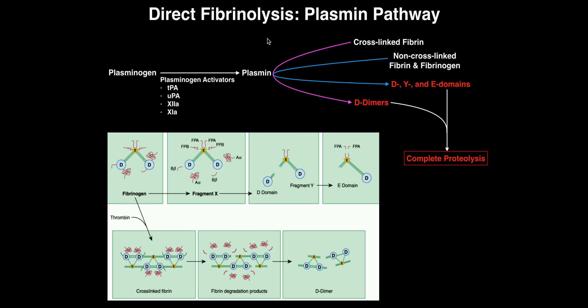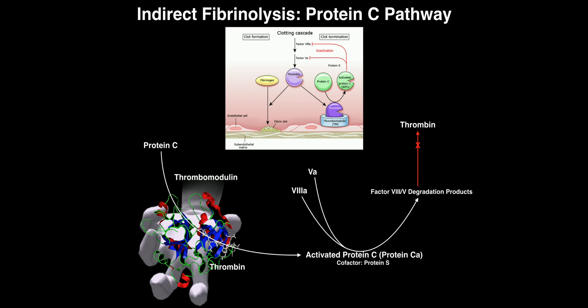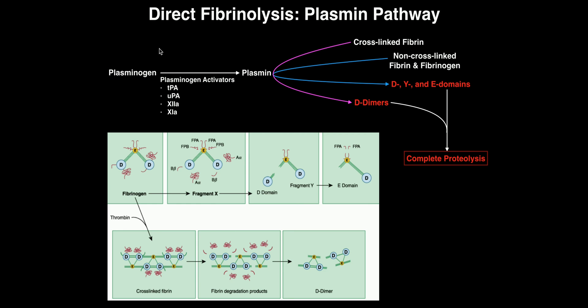Hopefully this video made sense. Make sure you go back and watch the video on indirect fibrinolysis via the protein C pathway. Hopefully you learned something about the activation of plasminogen into plasmin and how fibrin and fibrinogen get destroyed — this is how you regulate fibrin formation.